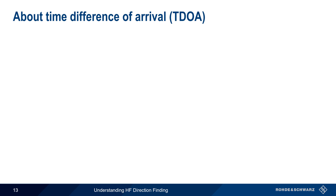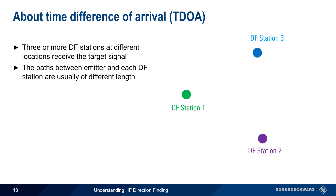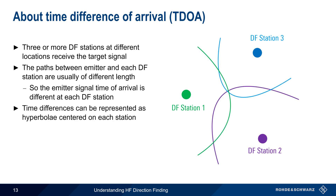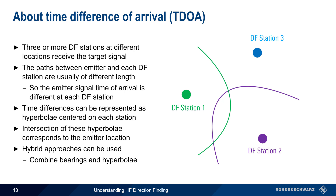The last methodology we'll discuss is time difference of arrival, or TDOA. Three or more DF stations in different geographical locations each receive a target signal. In most cases, the paths or distances between the emitter and each station are different, so the signal will arrive at different times at different stations. These time differences can be represented as curves or hyperboli centered on each station, and the intersection of these hyperboli corresponds to the emitter location. It's also possible to integrate TDOA into a hybrid direction-finding approach, in which some stations generate hyperboli and some stations generate bearings. In this example, there is ambiguity when using only two TDOA stations because the hyperboli cross at two points, but this ambiguity is easily resolved by introducing a line of bearing obtained from a third station.